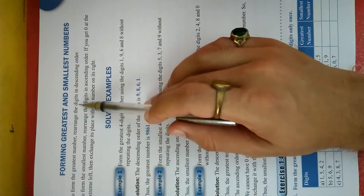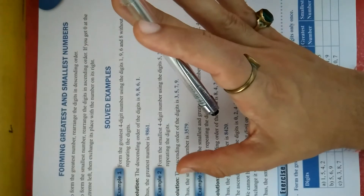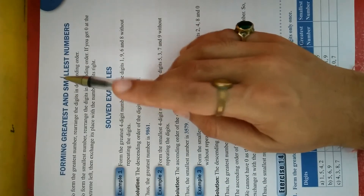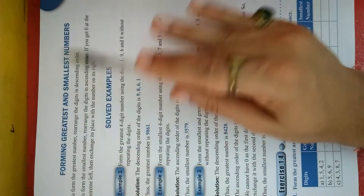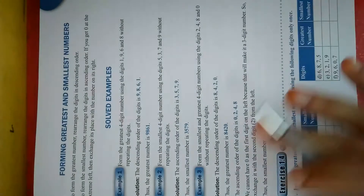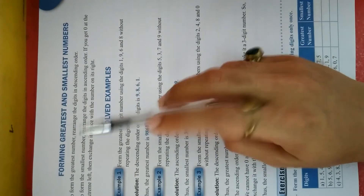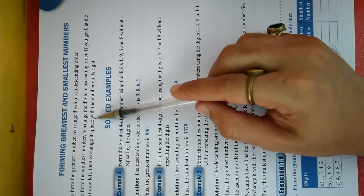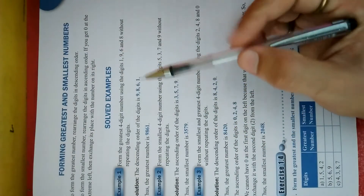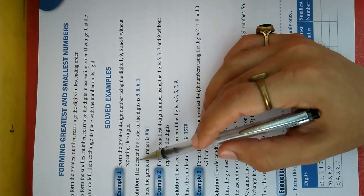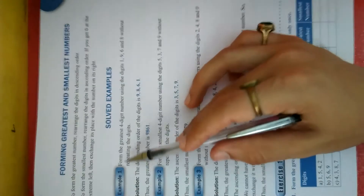To form the greatest number, rearrange the digits in descending order. So the first thing we learned is that to find the greatest number from given digits, we arrange them in descending order. Descending order means greatest to smallest — big to small. So we will first find the greatest number in the exercise. Descending order means we write the largest digit first, then the next smaller, then smaller, and so on.